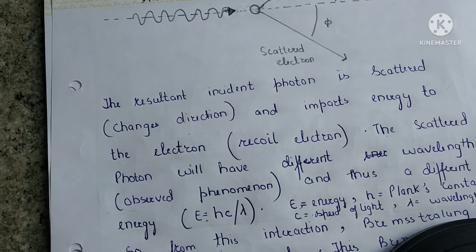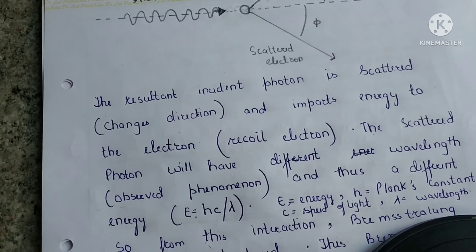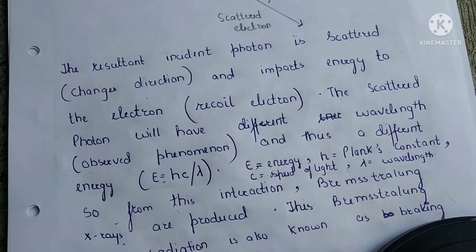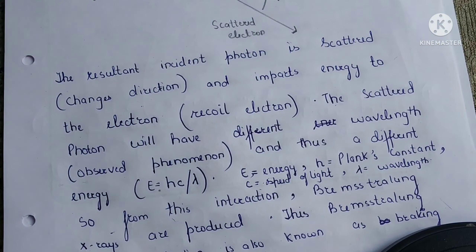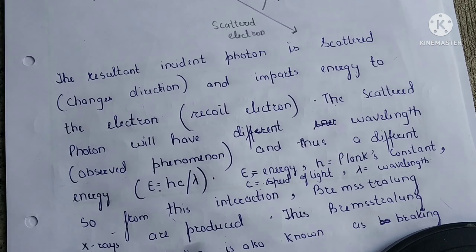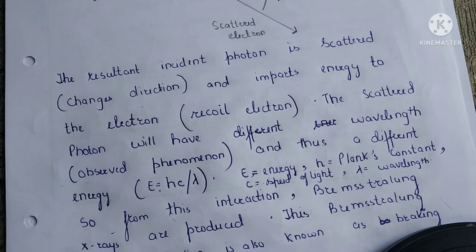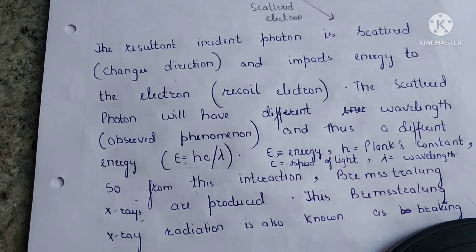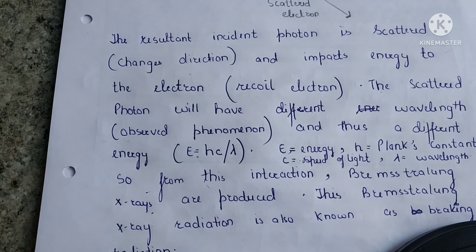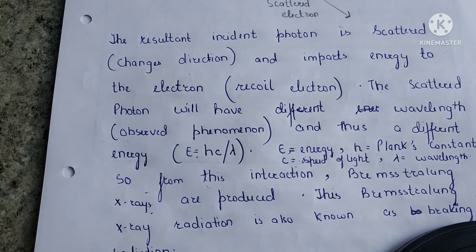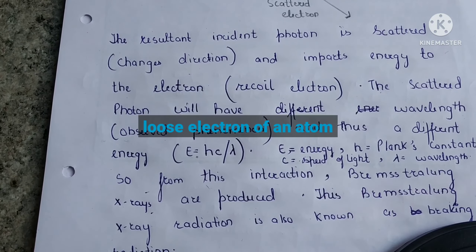You need to make a note here that from this interaction of Compton scattering we get to produce Bremsstrahlung x-rays. So Bremsstrahlung x-rays are formed due to Compton scattering. You can simply define Bremsstrahlung x-rays as x-rays formed from the collision of a photon and a loose electron of an atom.